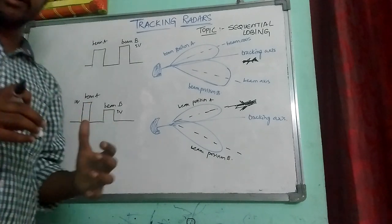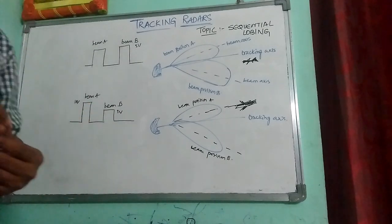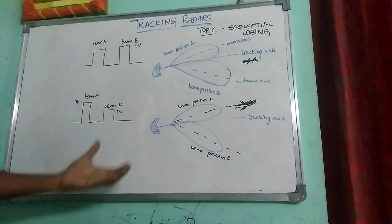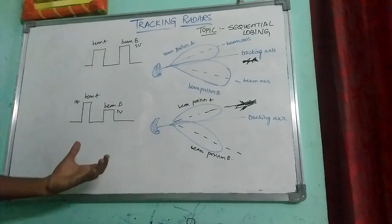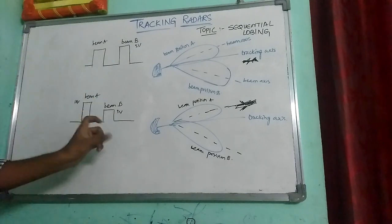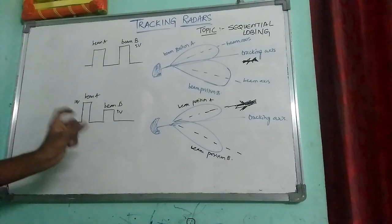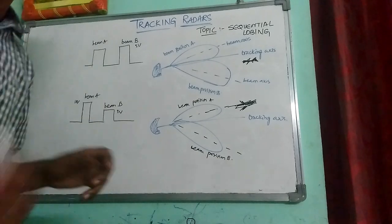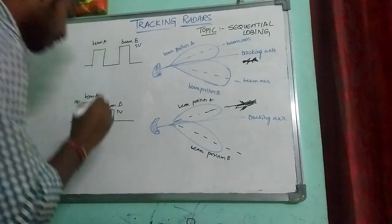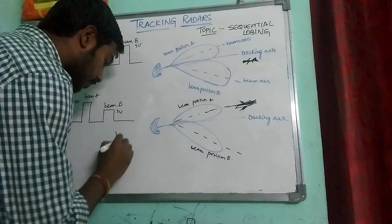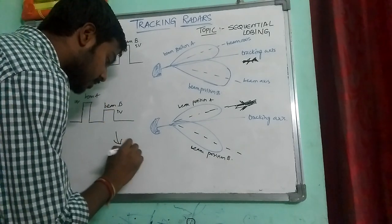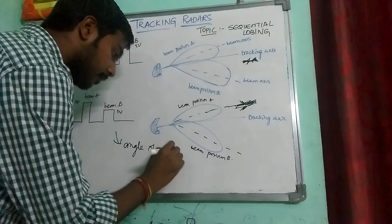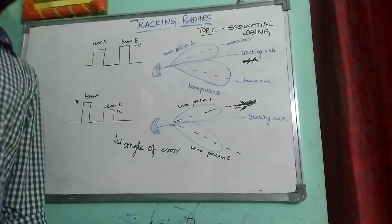We can calculate this angle of error. Whenever we calculate the voltage difference, that gives the angle of error. This voltage difference provides us the angle of error.